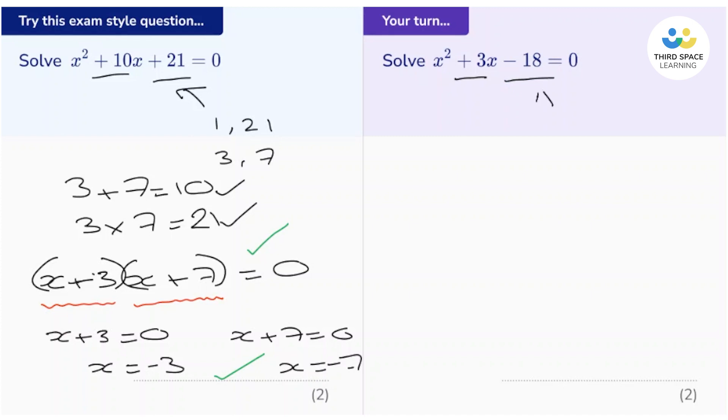So let's start by writing out the factor pairs of 18. There's 1 and 18, 3 and 6, and 2 and 9. OK, now we need to pick a pair of these numbers that will add to give 3, and multiply to give negative 18.